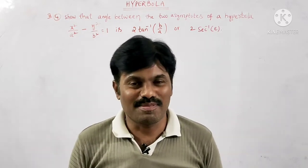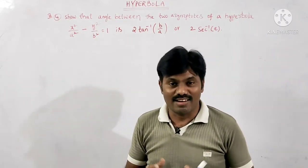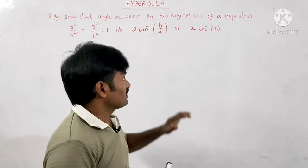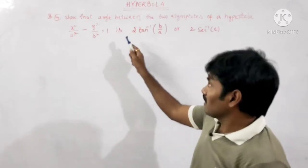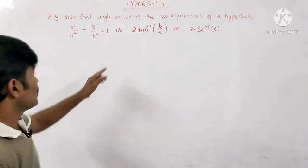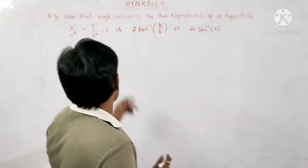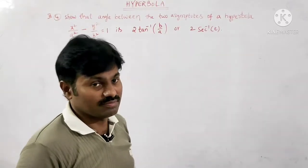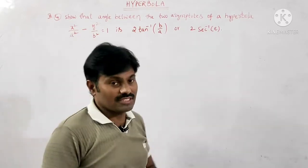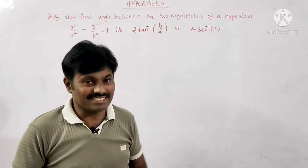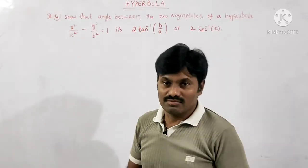Hello everyone, welcome to my channel. In this video lecture we are going to discuss an important concept: the angle between the asymptotes of a hyperbola. The angle between two asymptotes of a hyperbola is 2·tan⁻¹(b/a), where the hyperbola must be in standard form. The angle is also expressible as 2·sec⁻¹(e), where e is the eccentricity.